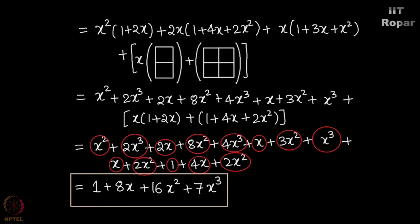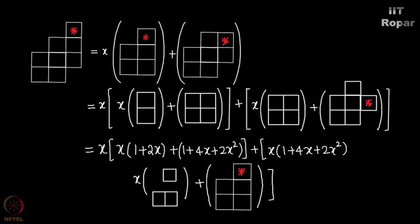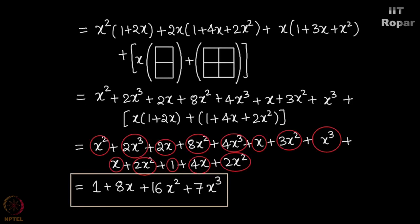Finally you will get this as the answer, you can check the intermediate steps by staring through this slide. You will get 1 plus 8X plus 16X square plus 7X cube, which means in this chessboard you can place 1 rook in 8 ways, 2 rooks in 16 ways, and 3 rooks in 7 ways.